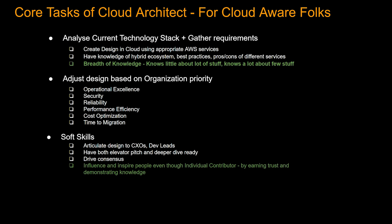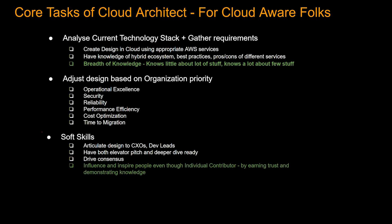This next one is a must-have: you have to inspire people even though you are an individual contributor. Resources kind of have to listen to their manager because at year-end the manager does their review. But an architect needs to get help from those resources by earning trust and demonstrating knowledge. Going back to soft skills, the architect has to conduct one-to-few and one-to-many training sessions on AWS services and designs.